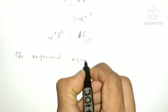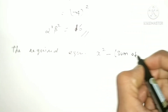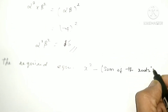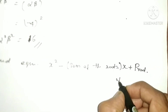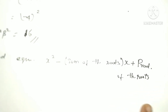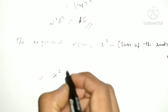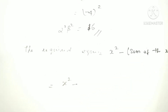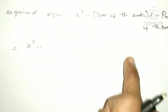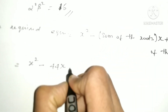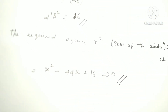So the required equation is x² minus (sum of the roots) times x plus (product of the roots) equals 0, which gives x² minus 44x plus 16 equals 0. So this is the required equation.